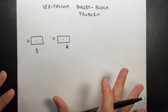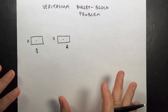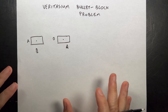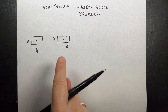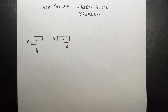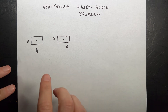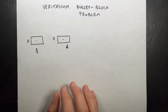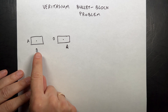We are in class, looking at work energy for point particle systems versus real systems. This is the Veritasium bullet block problem. I already made a video about it but I'm going to make a new video. Let me explain the problem, then show you the result, and then explain how it works.